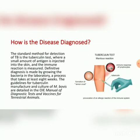The standard method for detection of TB is the tuberculin test, where a small amount of antigen is injected into the skin and the immune reaction is measured. Definitive diagnosis is made by growing the bacteria in the laboratory, a process that takes at least 8 weeks.